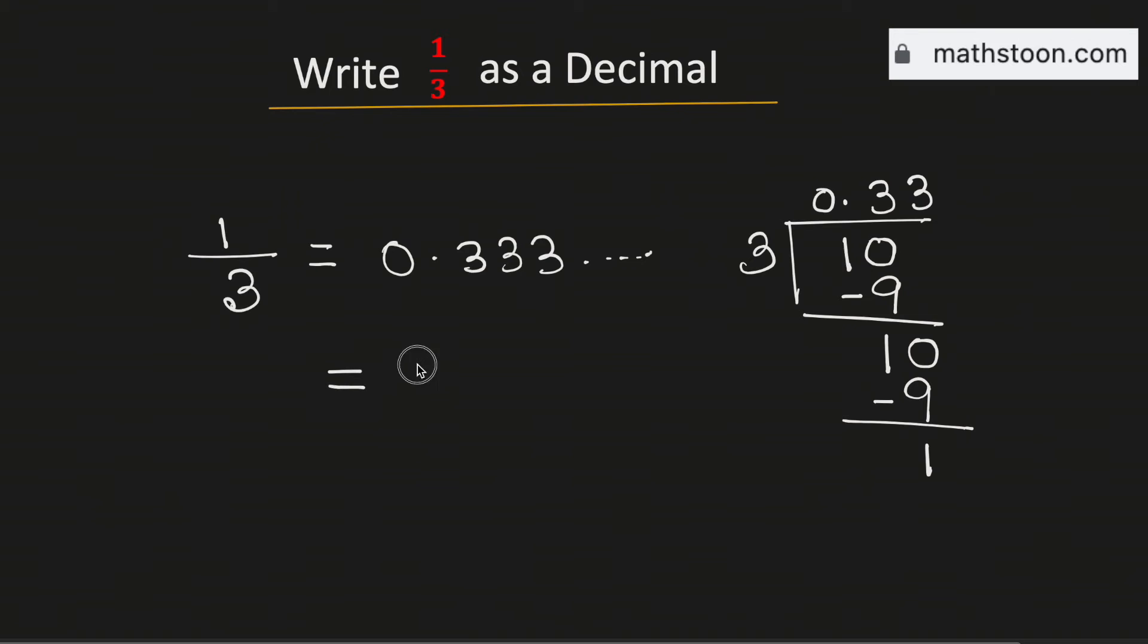This can be written as 0.3 bar. This means 1 over 3 is equal to 0.3 with 3 repeating. And this is our final answer.